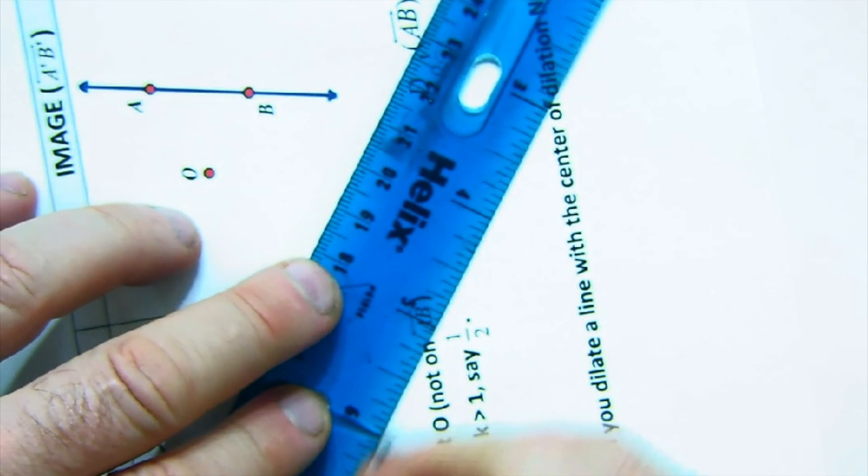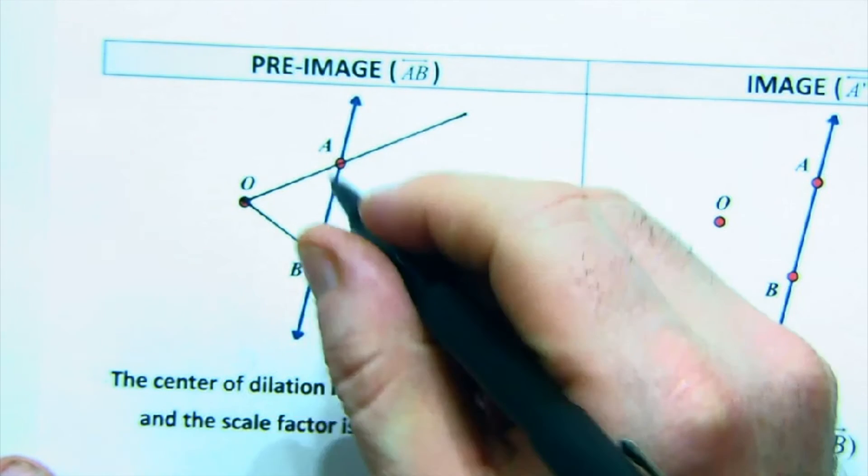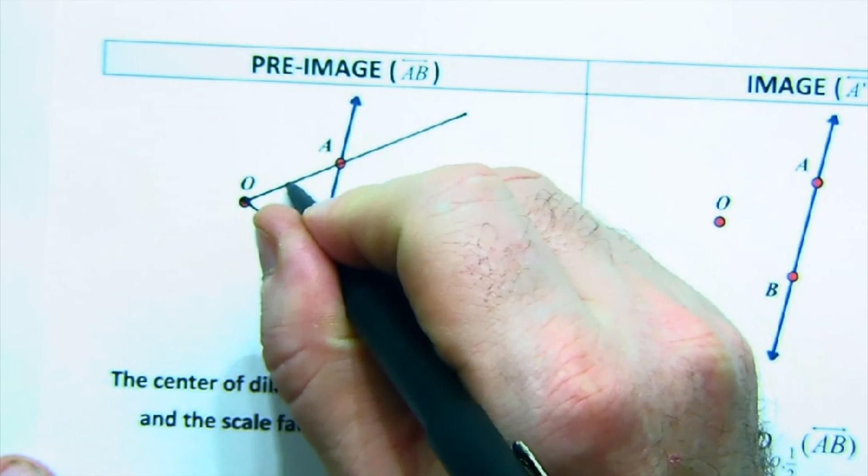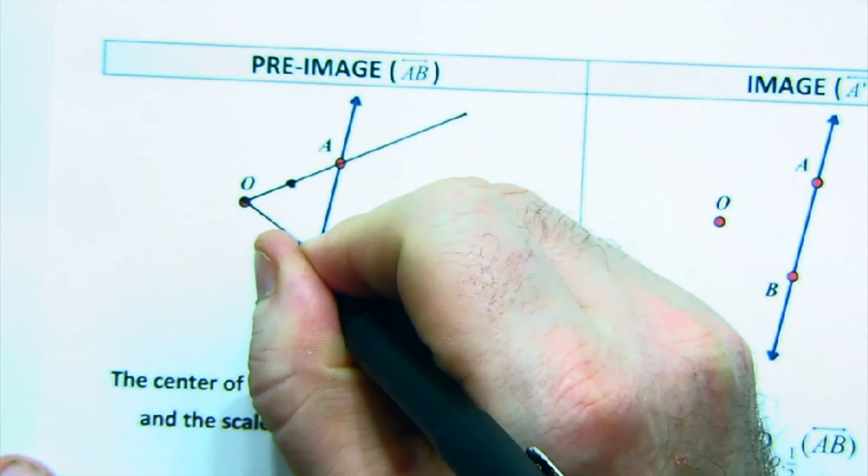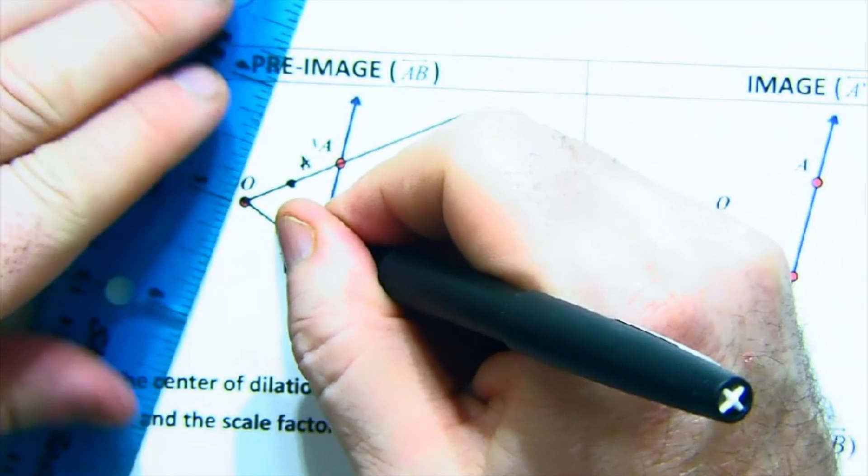If you dilate something by, say, a scale factor of a half, everything gets pulled in. Half that distance. And so the line doesn't get bigger or smaller, but what does happen is that this distance A would come back half the distance, this distance B would come back half of its distance to get you A prime and your B prime.